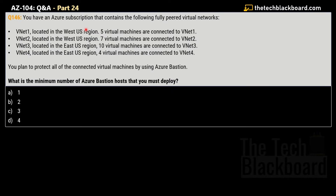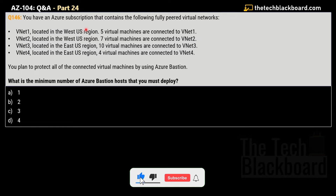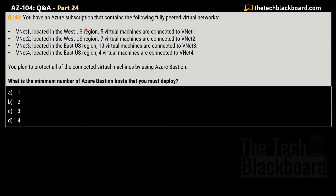Here comes the very first question for today — question number 146, part 24. Before I read this question, I want to remind you to please watch the previous episode, episode number 23, which contains a lot of important questions on the Azure virtual networking concept. We covered many questions on VNet peering there. It's not necessary to watch that before this one — you can always go back. But for now, let's read this question.